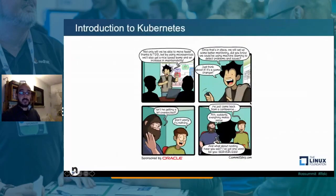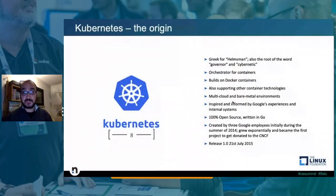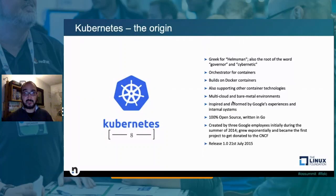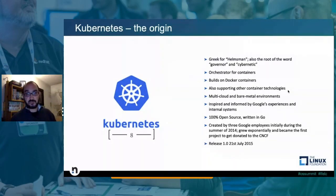Let's move forward from container images to the orchestrator and Kubernetes. Kubernetes — the term comes from Greek meaning 'helmsman' — is the orchestrator for containers. It builds on Docker containers but also supports other container technologies. It can run on any cloud provider or on bare metal virtual machines. It is inspired by Google's experience, is 100% open source written in Go, and was created by three Google employees in 2014. Version 1.0 was released in 2015, and we are currently running version 1.9 as the latest production-ready version.